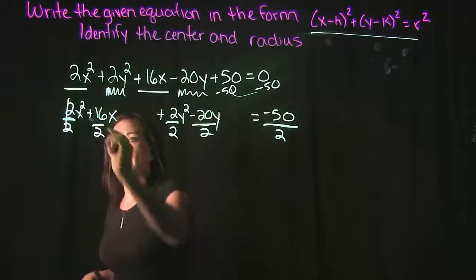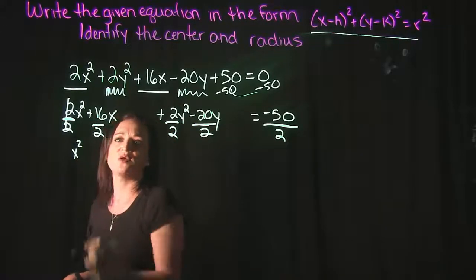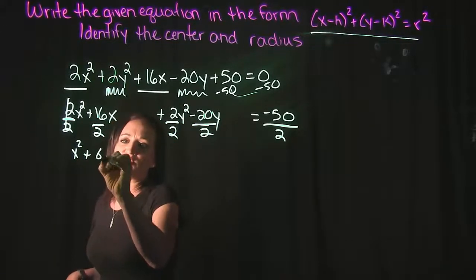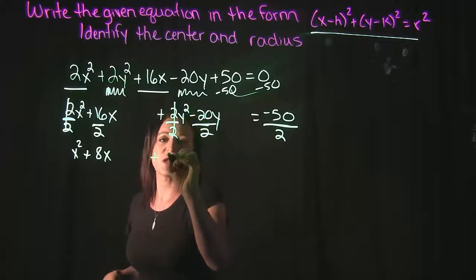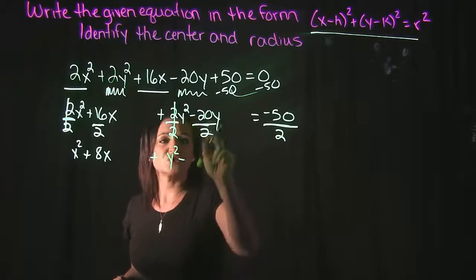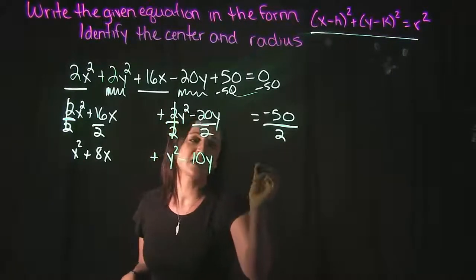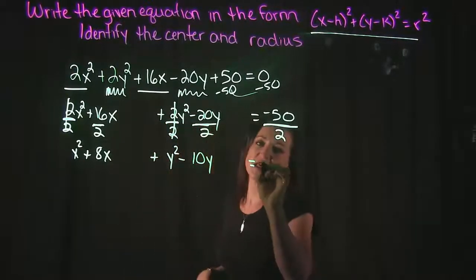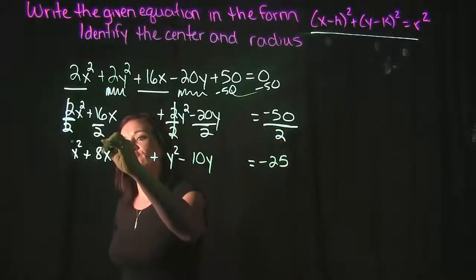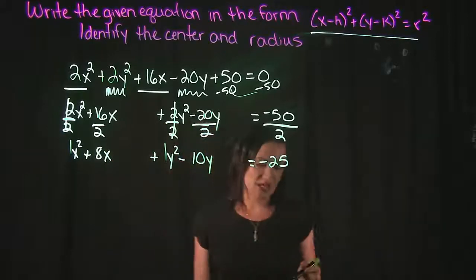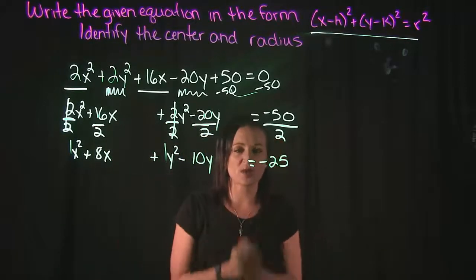So let's go ahead and divide. 2 divided by 2 cancels, leaving us with x². 16 over 2 gives us an 8. We're still leaving our space. Plus 2 over 2 cancels, leaving us with y². Minus 20 over 2 is 10, and then that's going to equal to a -25. Now I have 1s here in front as my leading coefficients. That's exactly what I'm looking for.